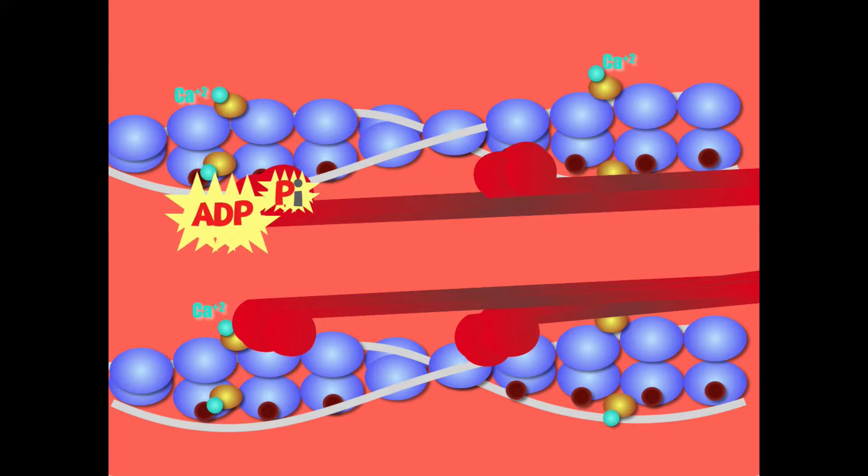At any given point you have millions upon millions of myosin cross bridging with actin and pulling in the actin, contracting the muscle. They're not all doing it at the exact same time, kind of like when you're pulling in the boat.